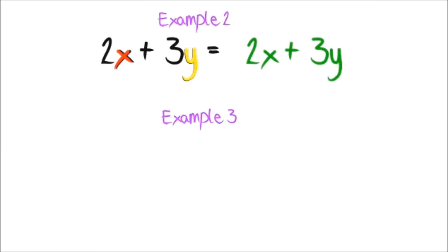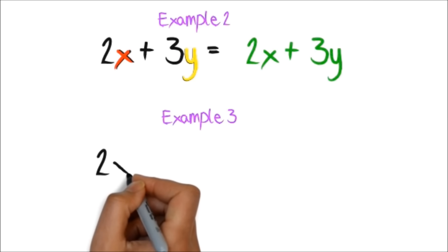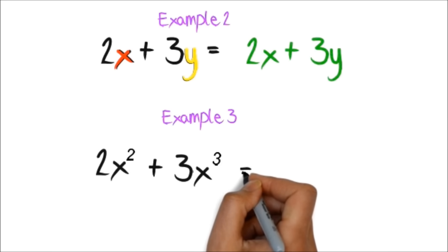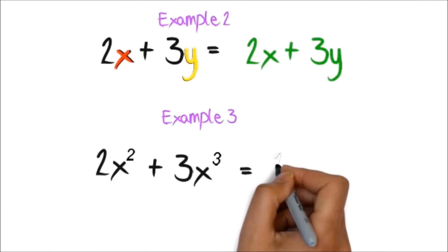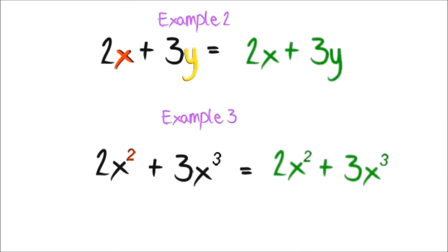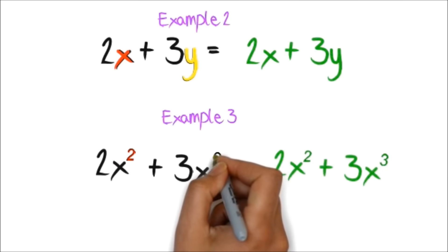Example 3. If you have 2x squared and 3x cubed, you cannot add them because of the different exponents. One of the x is squared and the other is cubed.